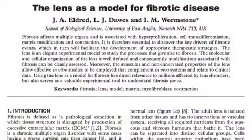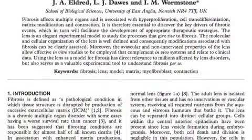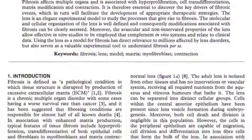You're actually the author of the last article in the issue, which is called the lens as a model for fibrotic disease. So what is fibrosis? And why is the lens an elegant model for studying it? Well, fibrosis is a general term which really involves an excessive production of matrix that reduces the physiological function of a tissue organ. And consequently, this can even lead to death.